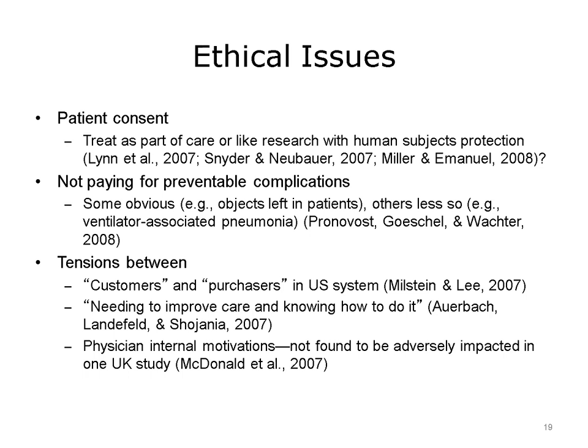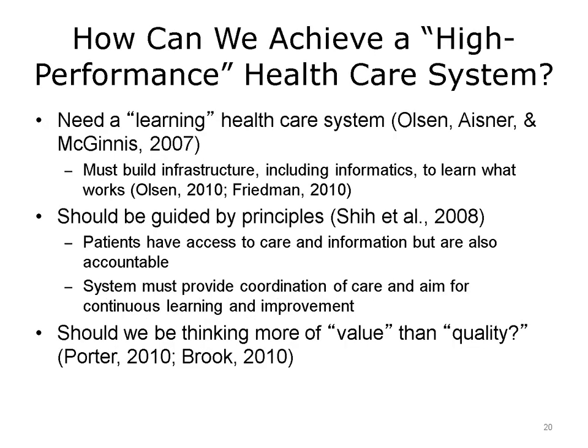There are also tensions regarding quality issues. For example, customers and purchasers may have different priorities when it comes to quality measurement. Customers may want to see everything and have everything focused on their improved care. Purchasers may be more focused on the economic aspects. Tension also exists between the desire to improve care and not always having knowledge of the best ways to do so. There may also be tensions between a physician's internal motivations for his or her patients and P4P initiatives. One study fortunately found that the internal motivations of physicians were not adversely impacted in a P4P situation. Finally, how can a high-performance health care provider system be achieved? The Institute of Medicine, the ONC, and others have talked of the need to build a learning health care system.